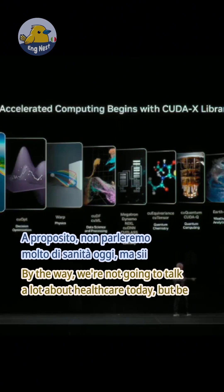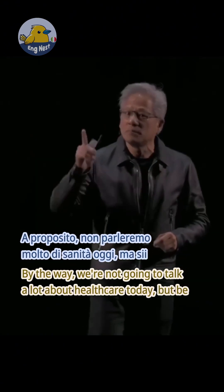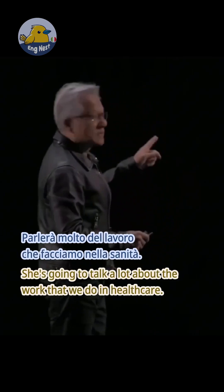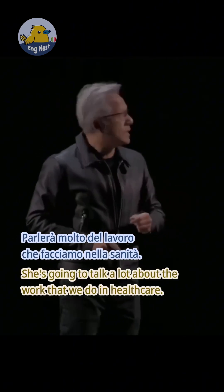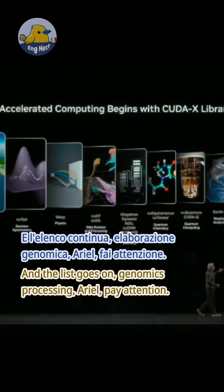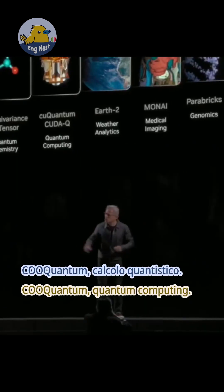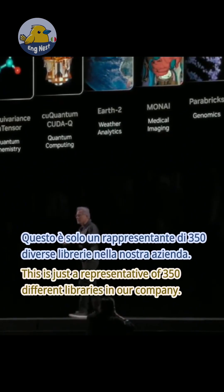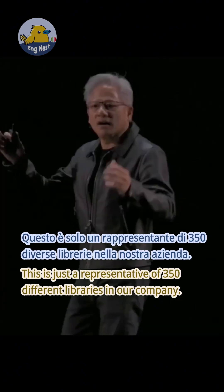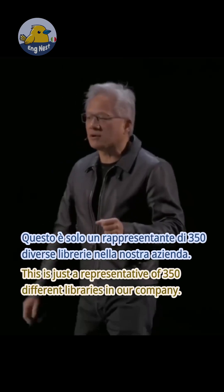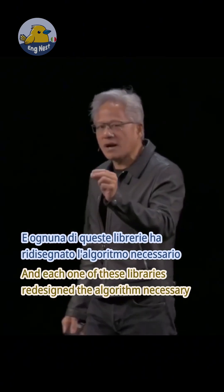The list goes on. MONAI — really, really important — the number one medical imaging AI framework in the world. We're not going to talk a lot about healthcare today, but be sure to see Kimberly's keynote; she's going to talk about the work we do in healthcare. And the list goes on — genomics processing, ARIA — pay attention, we're going to do something really important here today — and cuQuantum for quantum computing.